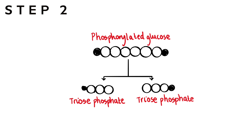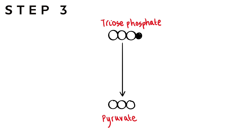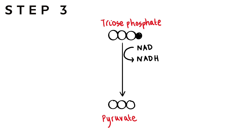Step two: the phosphorylated glucose is split into two molecules of triose phosphate, each with three carbon atoms — a straightforward splitting step. Step three: each triose phosphate is converted into pyruvate, which still has three carbon atoms. This conversion involves oxidation — NAD acts as the oxidizing agent, oxidizing triose phosphate while itself becoming reduced to NADH or reduced NAD by collecting those hydrogen atoms or electrons.